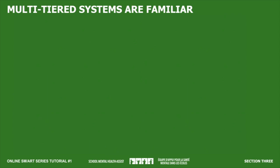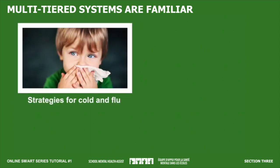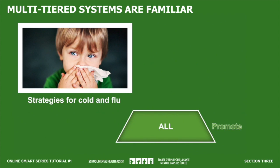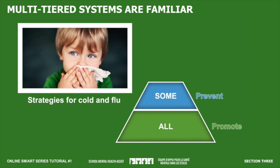Tiered models of support are familiar. Think about strategies that help prevent the spread of a cold and flu at school. Things like specific times for hand washing or making hand sanitizer and facial tissues available in the classroom are tier 1 strategies for all students. For students more susceptible to colds and flu, like those with immune deficiency, spending a bit more time reminding them to wash their hands or avoid proximity to those who are ill are tier 2 strategies, designed to prevent illness among those more at risk.